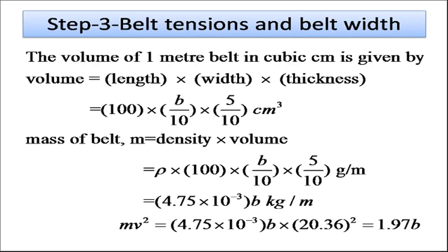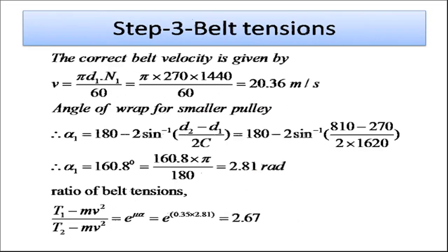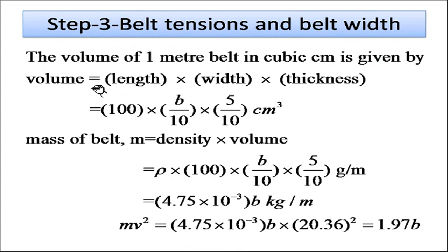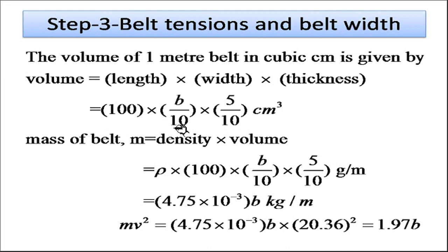To find mV², we first calculate the volume of belt per meter length: Volume = 100 × (b/10) × (thickness/10) in cubic centimeters, converting to centimeter cube because density is given in gram per centimeter cube. Mass per meter = density × volume. This gives mass per meter = 4.75 × 10⁻³ × b kg/m, where b is the belt width.